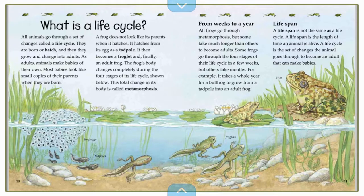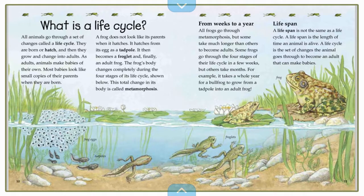From weeks to a year, all frogs go through metamorphosis, but some take much longer than others to become adults. Some frogs go through the four stages of their life cycle in a few weeks, but others take months. For example, it takes a whole year for a bullfrog to grow from a tadpole into an adult frog. We've talked about this with dogs and penguins — there are different types of frogs and toads that grow at different rates.